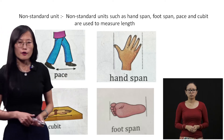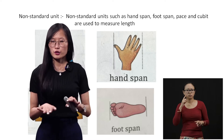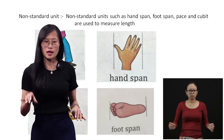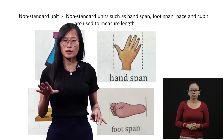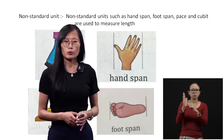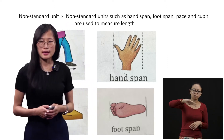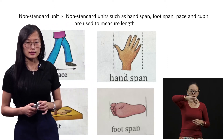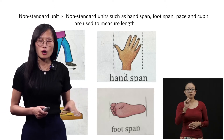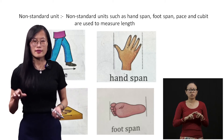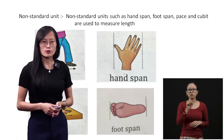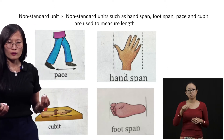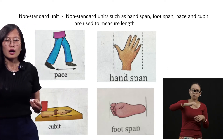If you measure a table using your hand span, and you ask your mother to do the same, will the measurement be the same? No, it will be different — because your hand is smaller than your mother's hand. So the measurement varies from one person to another.